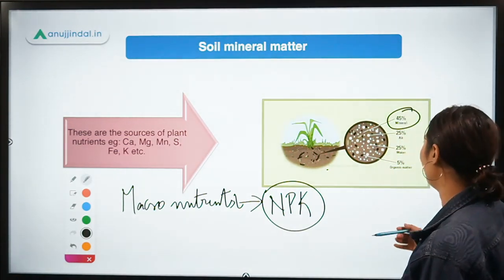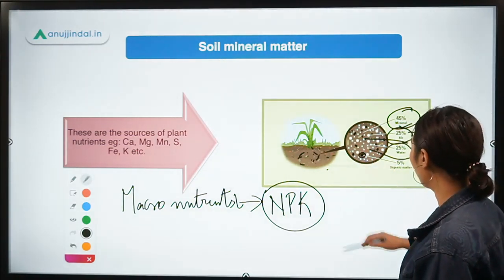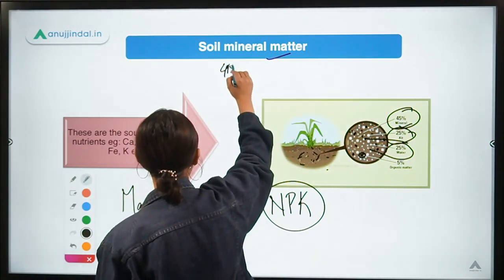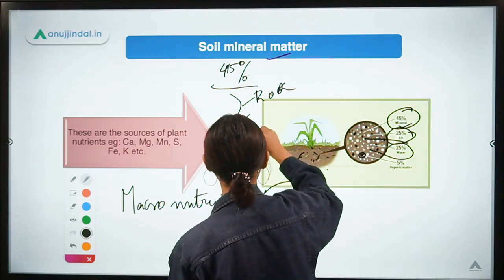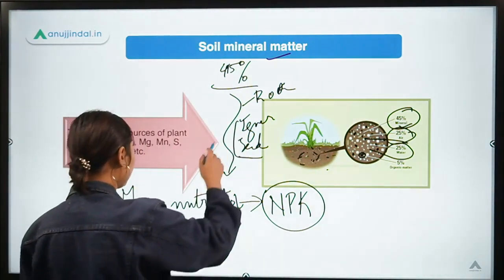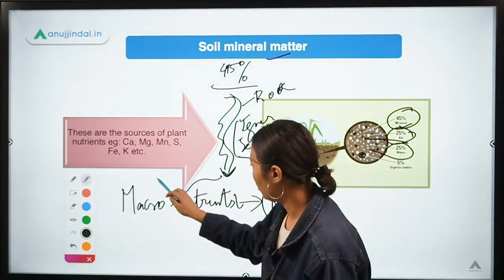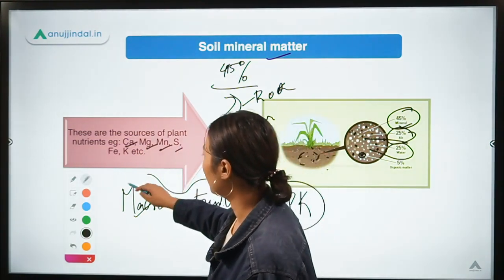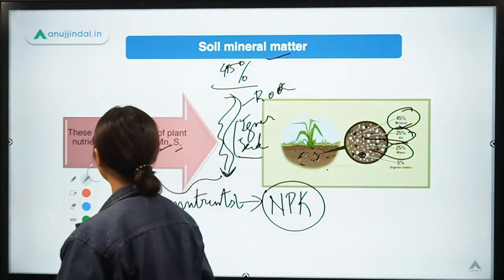About 45 percent of soil composition is filled with minerals, 25 percent is air, 25 percent is water, and about 5 percent is organic matter. The largest constituent — about 45 percent — is mineral. These minerals are broken down from rocks such as igneous or sedimentary rocks, and from years of breakdown we get macronutrients as well as other nutrients like calcium, magnesium, manganese, sulfur, iron, and potassium.